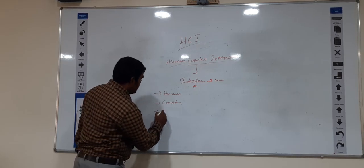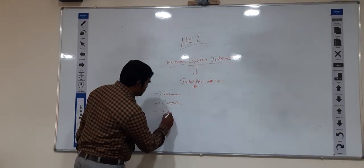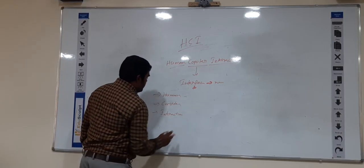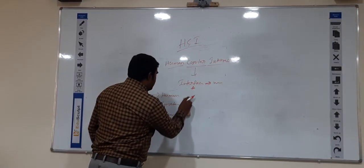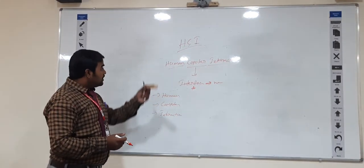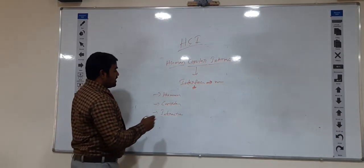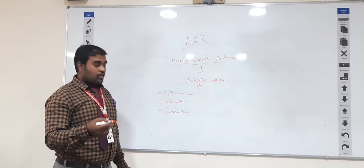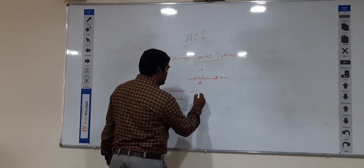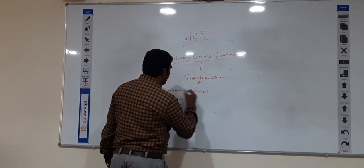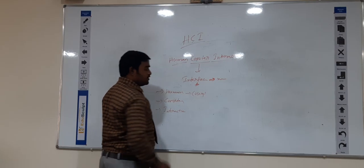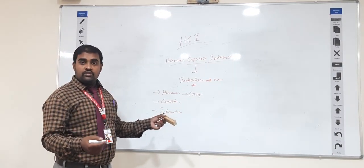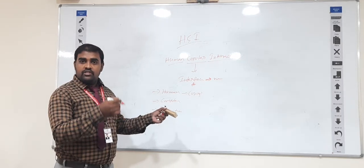Coming to HCI, naturally there are three components. First one is human, second is computer, and third one is interaction. These are the main components in HCI.